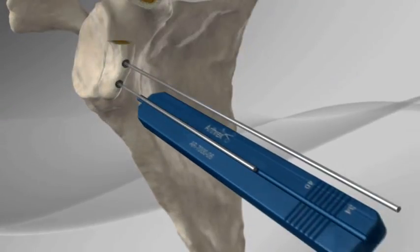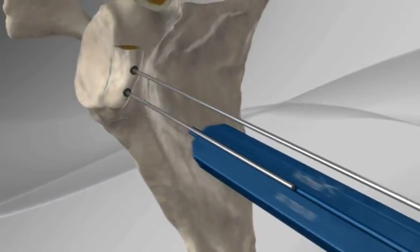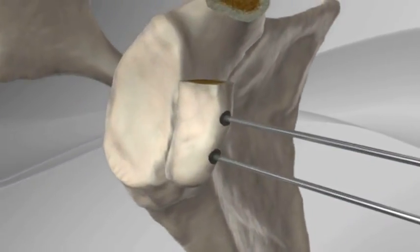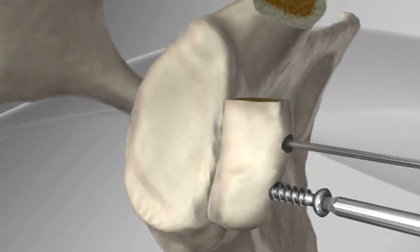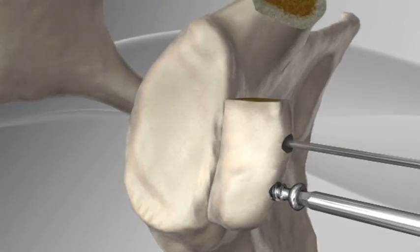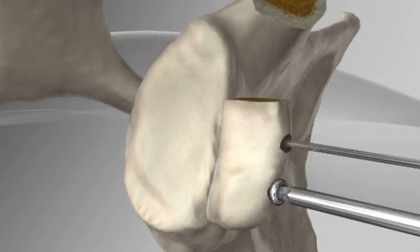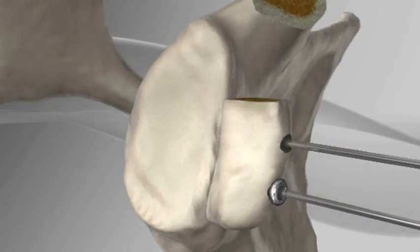A depth gauge is used to determine the length of the screws that will secure the bone block. The screws are placed over the guide wires and tightened down, fixing the bone block to the anterior glenoid and preventing further dislocations.